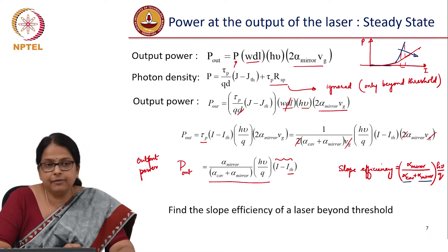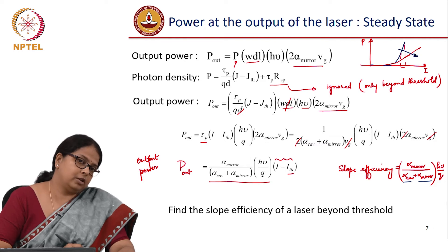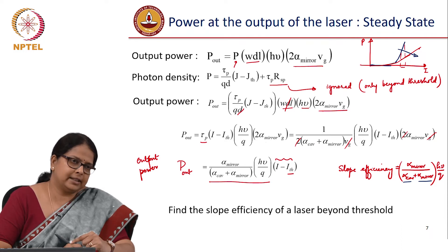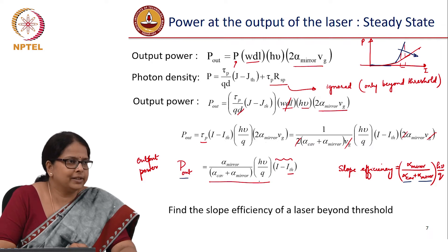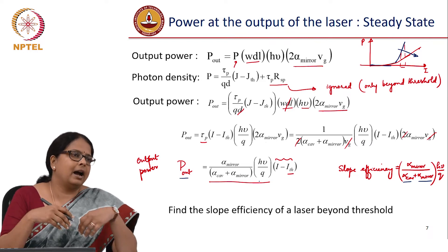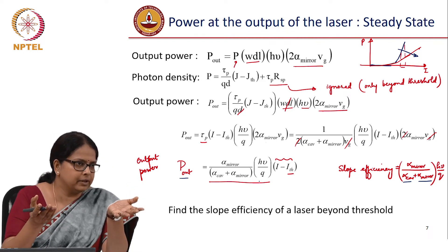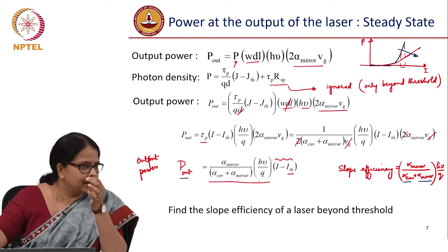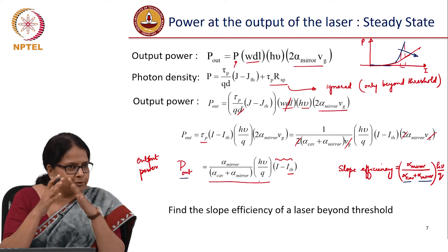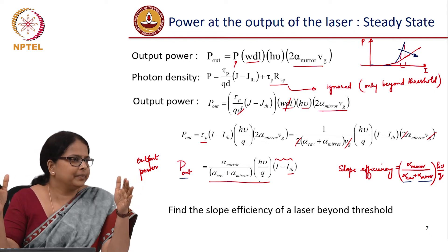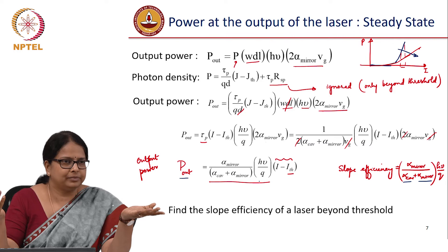So you can control the reflectivity of the mirror to get different slope efficiency. But what is the trade-off? This α_mirror, remember, has one more consequence. What is the other consequence of α_mirror? It is deciding what the power is, it is also deciding something more important: finesse of the cavity, the full width at half maximum of the cavity. If you keep your α_mirror high, you have high loss because of the mirror, which means that you get large power at the output, but at the same time, the full width at half maximum will start increasing. So that is the trade-off.